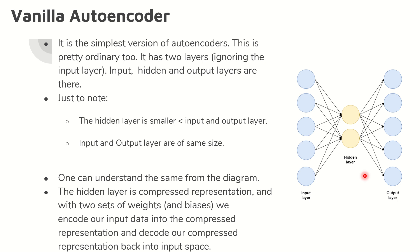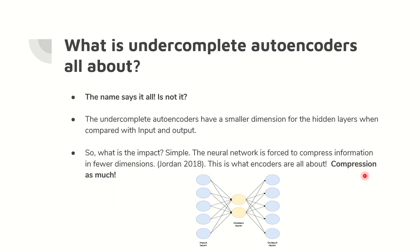With two sets of weights and biases, we encode our input data into the compressed representation and then decode it back as the output. That is what vanilla autoencoder is all about: input layer, a smaller hidden layer, and an output layer. It is very simple.